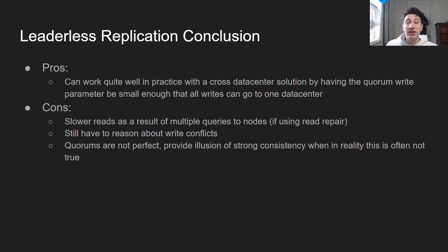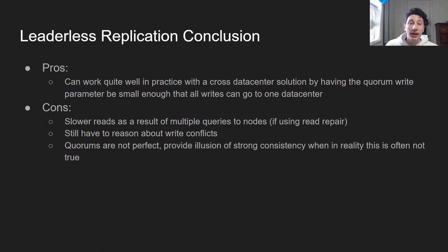In conclusion, even though leaderless replication isn't terribly hard to reason about, it can work quite well in practice using cross-data center solutions. For example, with 100 total nodes across 10 data centers with 10 nodes each, you might set the write parameter to 10. However, that means reads become very slow because you have to do many reads in parallel and possibly perform read repair. Additionally, you still have to reason about write conflicts the same way you would with multi-leader replication. And quorums are not perfect — even though they seem to provide strong consistency, between race conditions, sloppy quorums, and the fact that failed writes don't get rolled back, quorums don't actually provide a completely consistent database system. As a result, leaderless replication can be very good for achieving high write throughput, but it does lead to some consistency issues across the network.